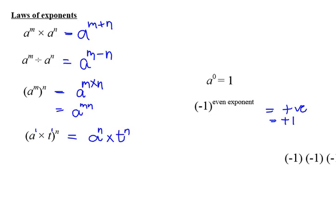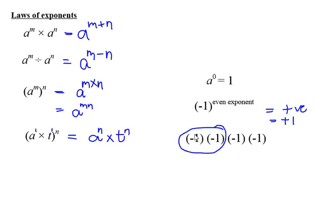Why does that happen? Well, remember, if I group two negatives together, a negative multiplied by a negative is positive. A negative multiplied by a negative is positive. So this would be positive multiplied by a positive. So my answer would be positive 1.